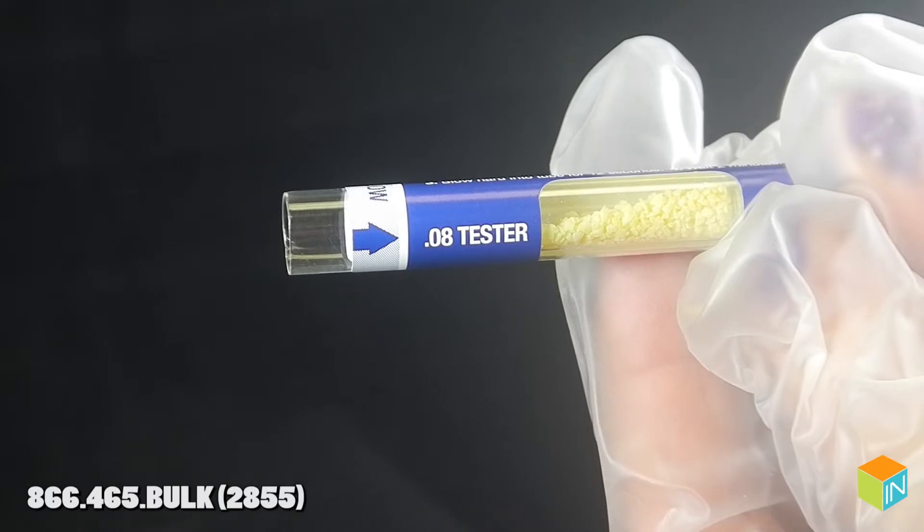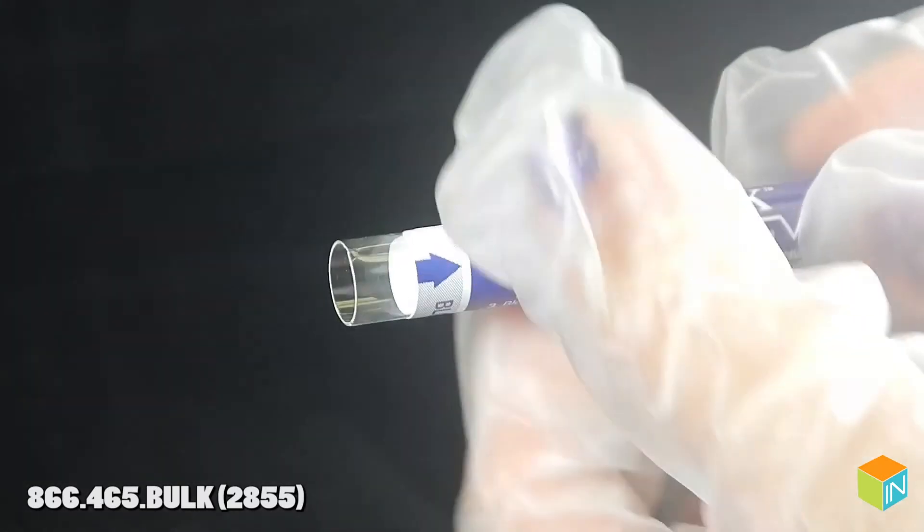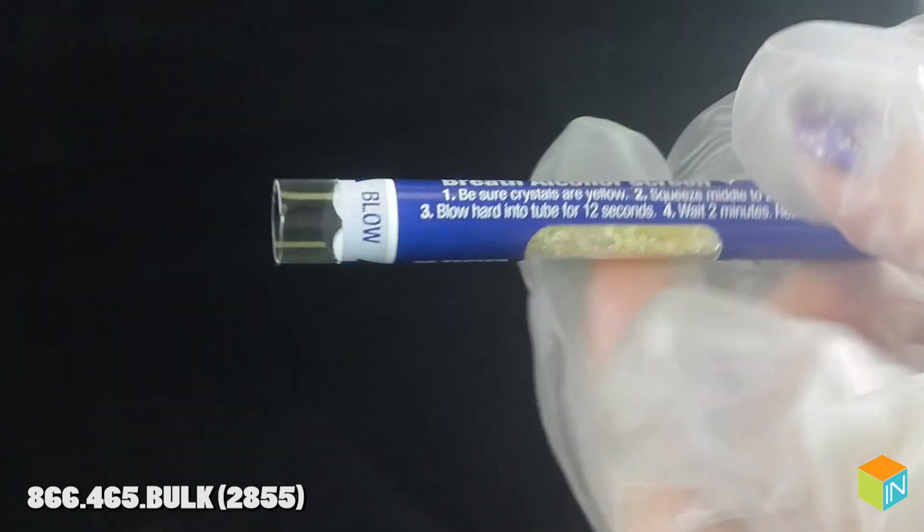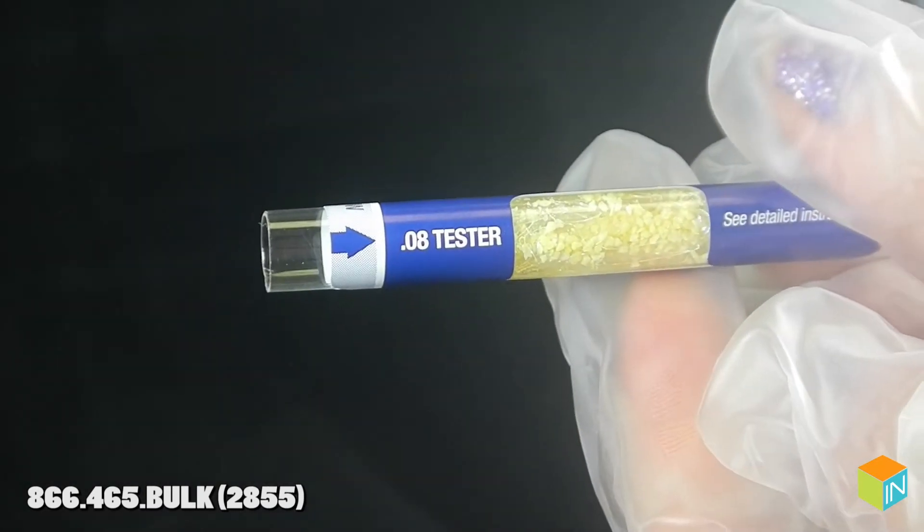Step 2: Squeeze the middle of the test to break inner glass capsule. Squeeze only once. Do not bend or twist. Rotate to distribute the crystals in viewing area. Use test immediately.